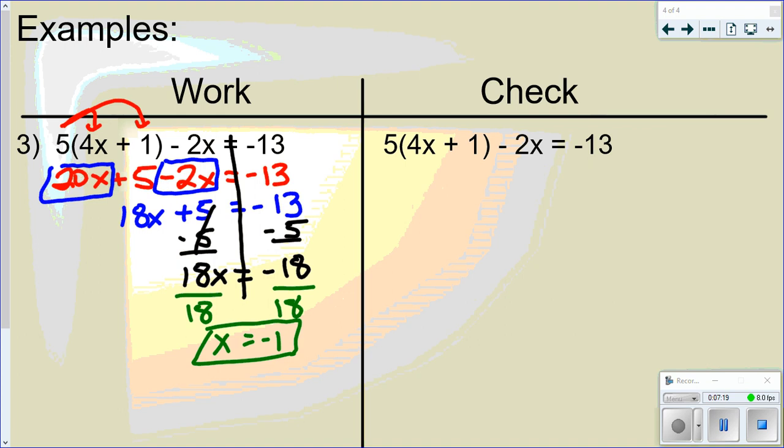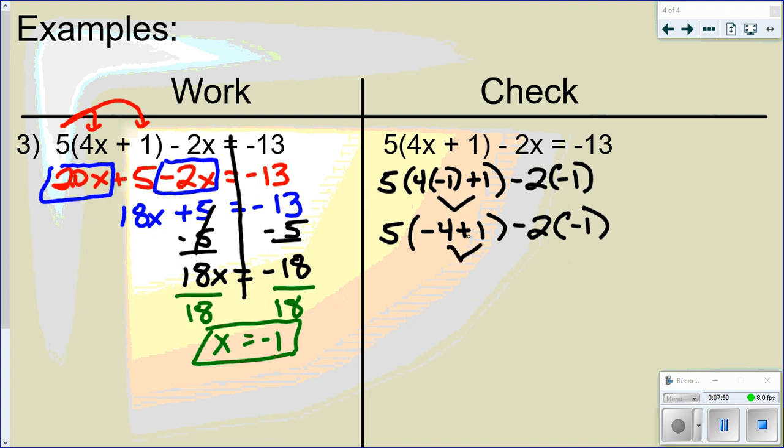All right, so last thing. Let's check this. So 5 times 4 times negative 1 plus 1 minus 2 times negative 1. So I've got to follow PEMDAS. So I need to do this parentheses first. So 4 times negative 1 is negative 4. So still in the parentheses, negative 4 plus 1 is negative 3. So I'm going to go ahead and I'm going to multiply each of these and then I'll subtract them. So that gives me negative 15.